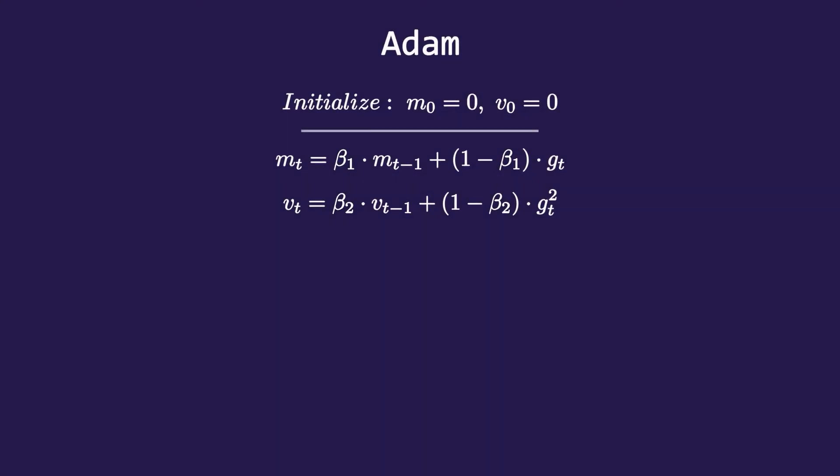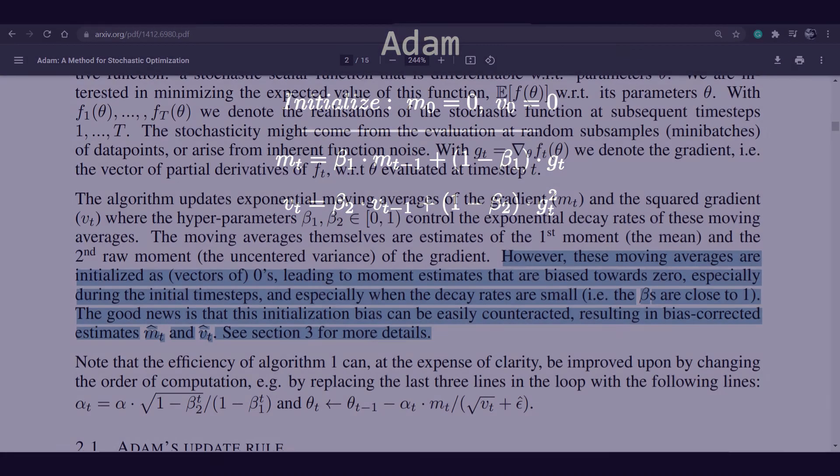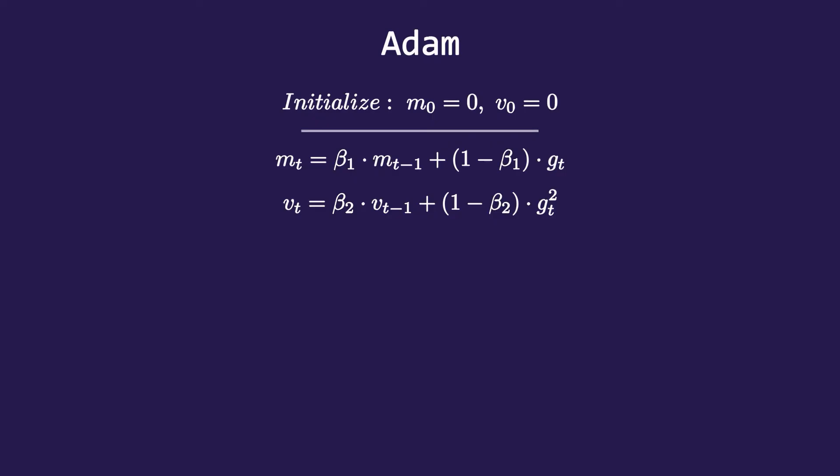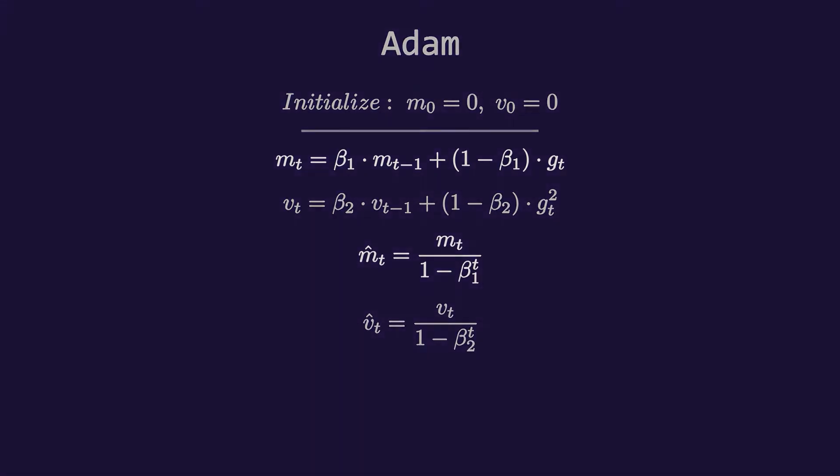But there is a slight problem with these two equations. As they are initialized with zero, they are zero-centered. In the paper, the author said 'these moving averages are initialized as vectors of zeros, leading to moment estimates that are biased towards zero, especially during the initial time steps.' The good news is that the initialization bias can be easily counteracted, resulting in bias-corrected estimates. Meaning we will write two more equations to correct this biasness. The first equation is to correct the biasness of mt and the second of vt.